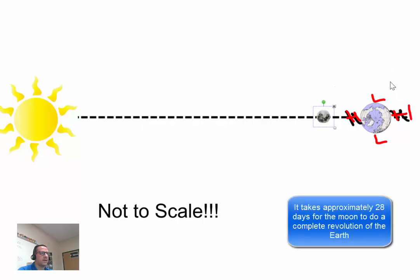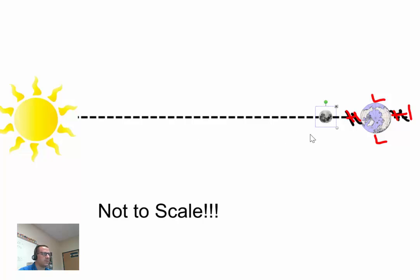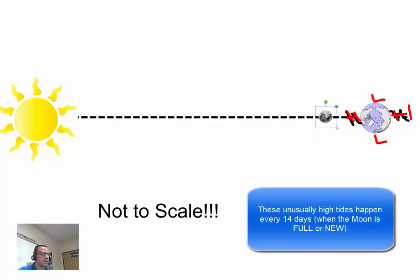Now, it takes 28 days for the Moon to do a full revolution around the Earth. So how often are we going to have this situation? Here. And then 14 days later, over here. So every two weeks, we would have this situation.